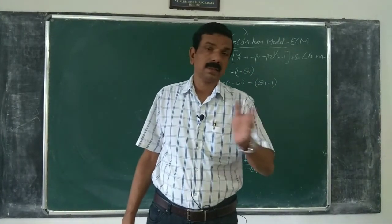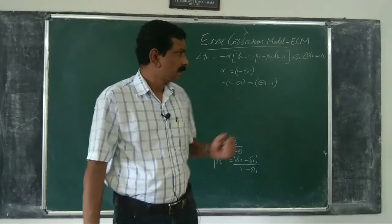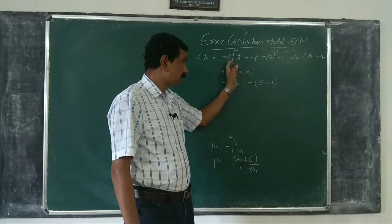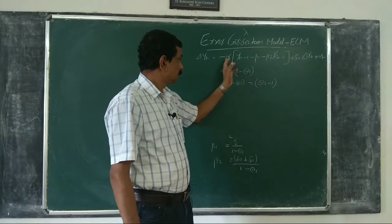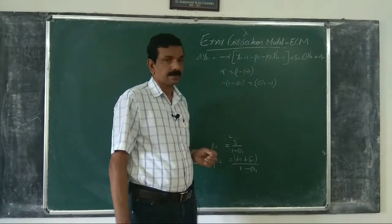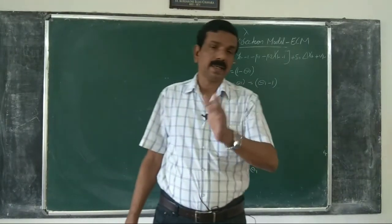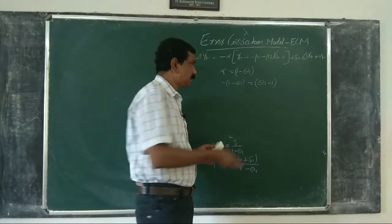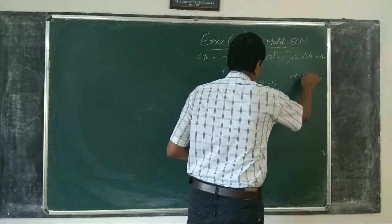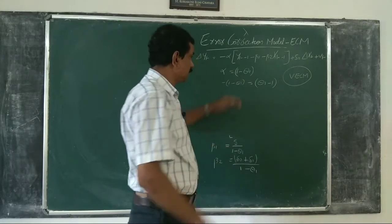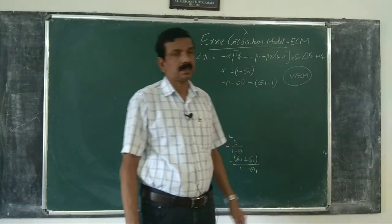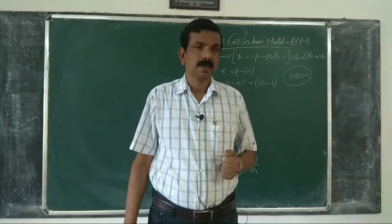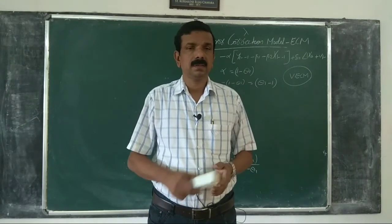That is the proportion of error corrected in each time period. But remember: to estimate ECM, it is assumed that this is a single equation model. But if error correction is taking place in both Y and X, you cannot specify the model with a single equation — correction is taking place only in Y here. If correction is taking place in both Y and X, you have to consider two equations and use the vector error correction model, VECM. In VECM, we obtain the extent of error correction in each variable Y, X, Z, etc. That we will see later.